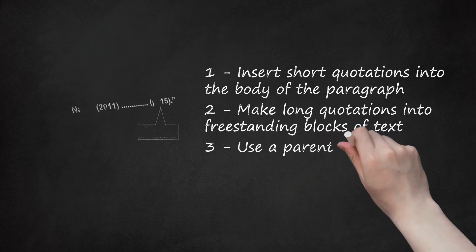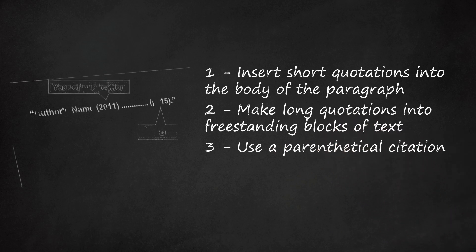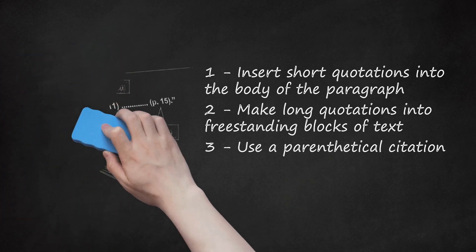Step 3: Use a parenthetical citation. You need to cite the author, year of publication, and page number preceded by "p." The best way to do this is to use a signal phrase with the author's name, followed by the date and page number in parentheses. For example: Smith (2011) insists that "quoting books is not difficult, but it can take time to get the hang of" (p. 15). If the author's name is not in the signal phrase, include the last name, year, and page number all separated by commas in the parenthetical citation. For example: He insists that "quoting books is not difficult, but it can take time to get the hang of" (Smith, 2011, p. 15).